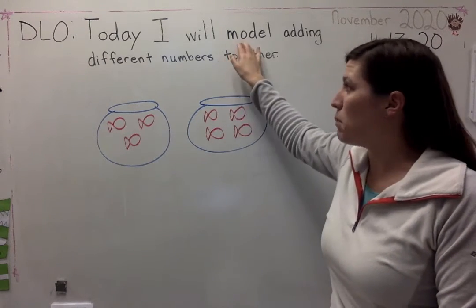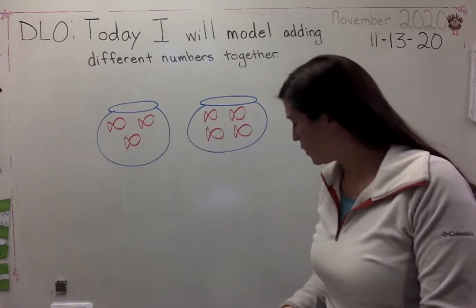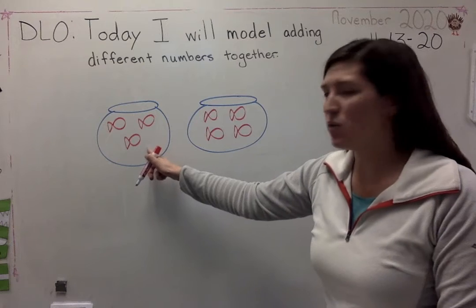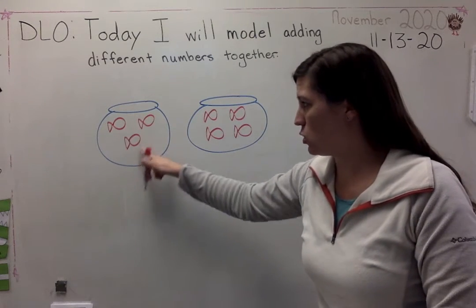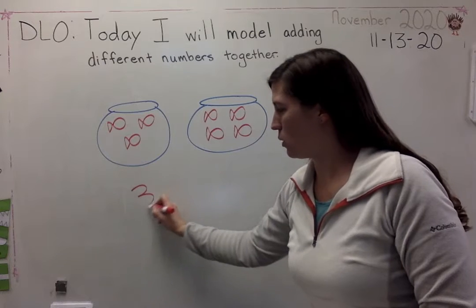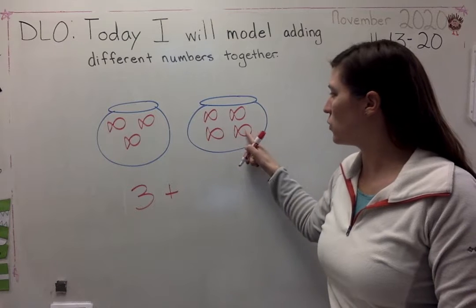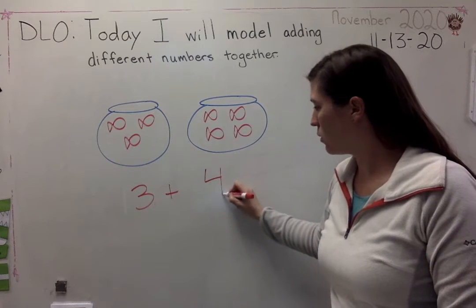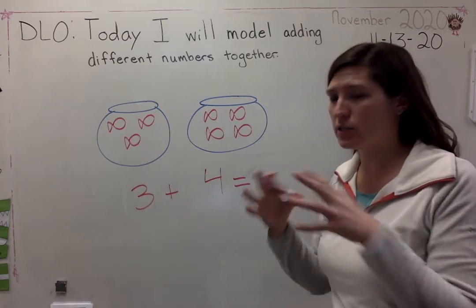Another way that I can model my fish is by using an equation. So if I write an equation, how many fish did I start with? Three. One, two, three. Three plus how many more did I get? One, two, three, four.